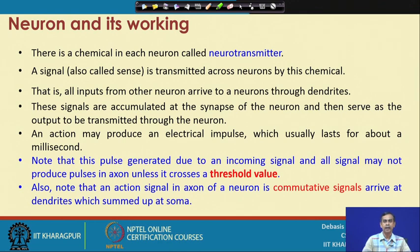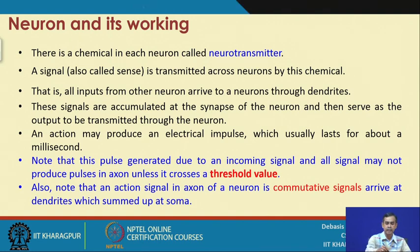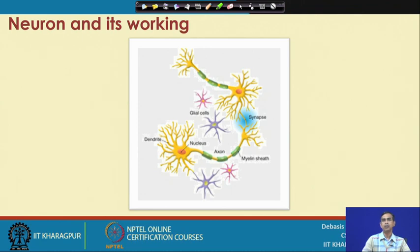Not all signals can be propagated from one neuron to another. Only signals with a strength greater than a threshold value can be transmitted. If the signal strength is less than this threshold value, the signal will not be transmitted. Another important thing is that signals can arrive at a neuron through different dendrites, and many signals coming from different neurons to a particular neuron are summed up at the soma. The summed signal is then propagated via the axon through the synapse to other neurons.